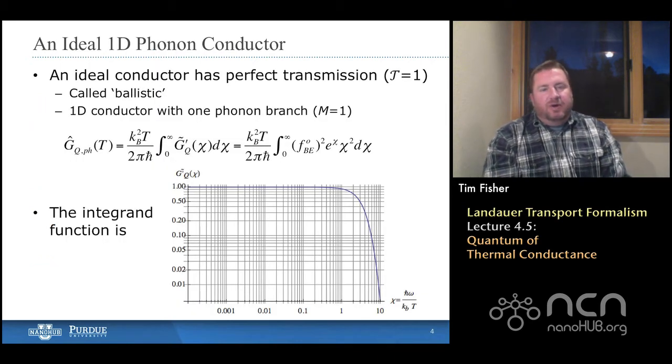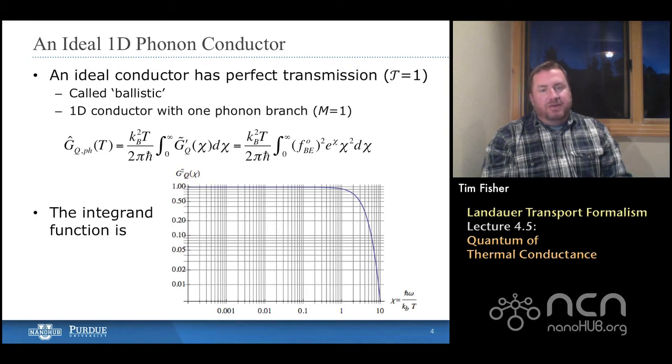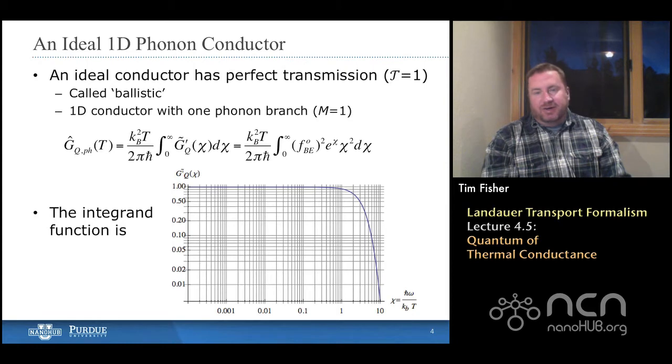If we look at this, we're going to first make some assumptions. We're going to say that we have an ideal one-dimensional phonon conductor. That's going to be the basis for this idea of the quantum of thermal conductance. What does ideal mean? It means the conductor has perfect transmission. We're assuming that the transmission function is unity. Some people will call that ballistic. That means there's no scattering events. We'll also assume that we have a one-dimensional phonon conductor. That means M, the number of modes, by definition equals one.